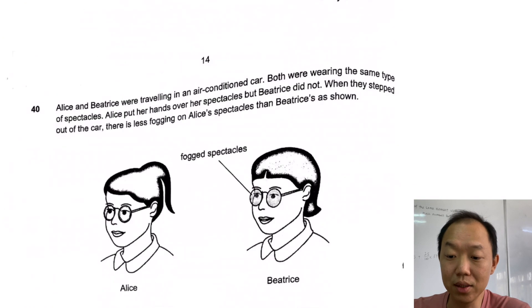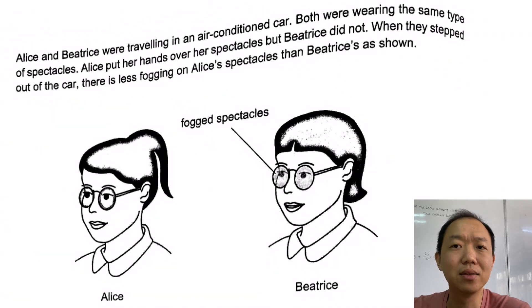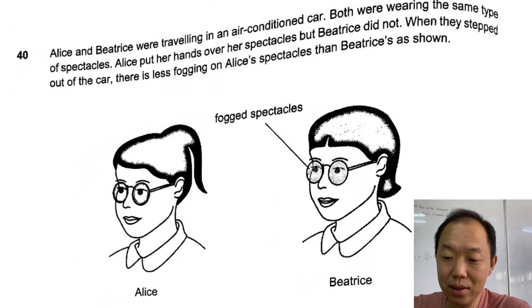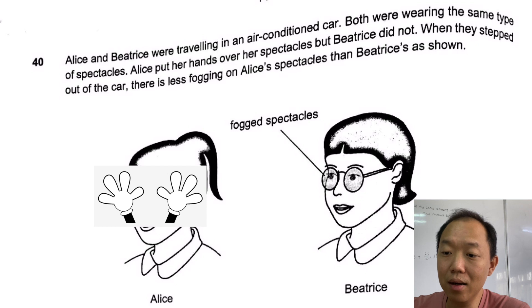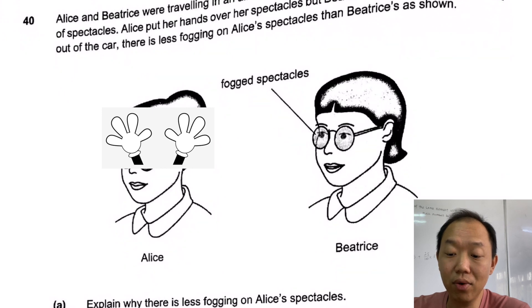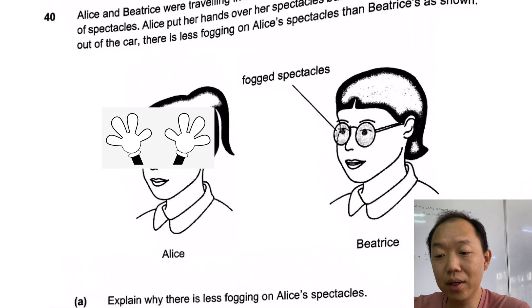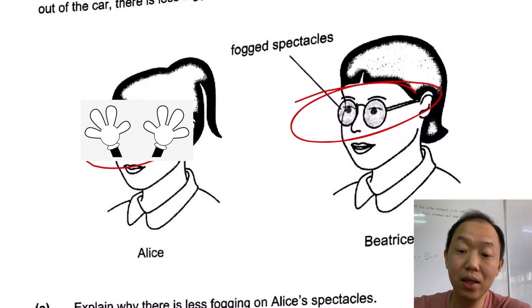Alice and Beatrice were travelling in an air-conditioned car. Both were wearing the same type of spectacles. Alice put her hands over her spectacles, but Beatrice did not. That's how it looks like. When they stepped out of the car, there is less fogging on Alice's spectacles than Beatrice has shown. Why is there less fogging on Alice's spectacles? First, the answer has got nothing to do with the length of the hair. It has got to do with the fact that Alice has her hand on her spectacles throughout the entire journey. This is condensation - there is condensation here, no condensation there.